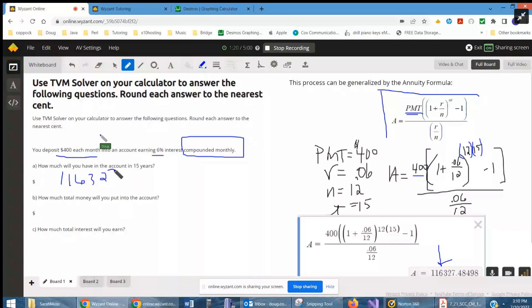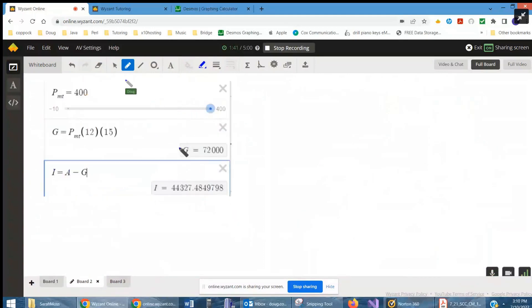Now, how much total money will you put into the account? Well, every month you're putting in $400, so 12 payments per year for 15 years. And there we go. Looks like you will have deposited $72,000. And if we subtract that from the amount that's in the account, you'll have your interest.